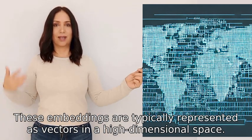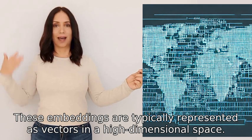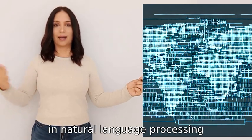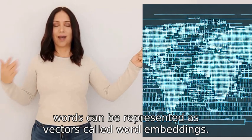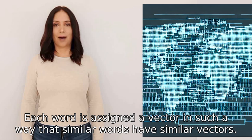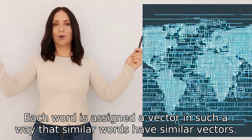These embeddings are typically represented as vectors in a high-dimensional space. For example, in natural language processing, words can be represented as vectors called word embeddings. Each word is assigned a vector in such a way that similar words have similar vectors.